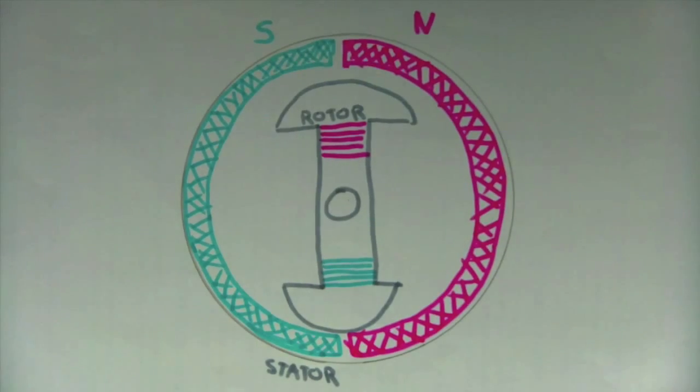The stator, as the name implies, is a stationary magnetic field generated by the permanent magnets on the outside. The rotor, on the other hand, is the spinning part of the motor and is basically just an electromagnet. When it's switched on, its poles are attracted to the opposite poles of the stator and it turns.